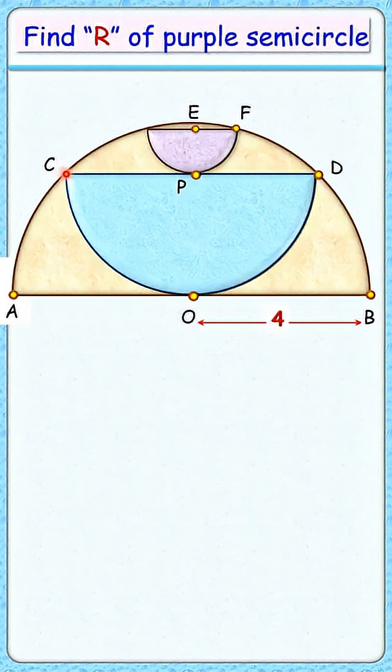With respect to this blue semicircle, CD is a diameter, and we know that diameter always subtends an angle of 90 degrees at the circumference.